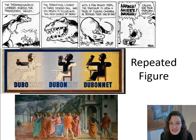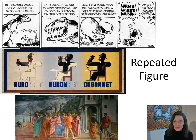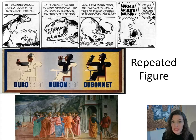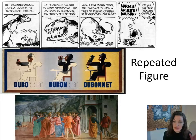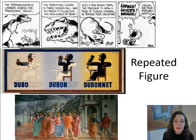The next vocab word is 'repeated figure.' In the West we read from left to right, so when we see a narrative represented with visuals, we expect it to go from left to right, as in the Calvin and Hobbes comic strip at the top. This is called repeated figure — you see the figure happening multiple times. Sometimes these are presented without divisions between the comic phases, as in the center Dubonnet ad from France.